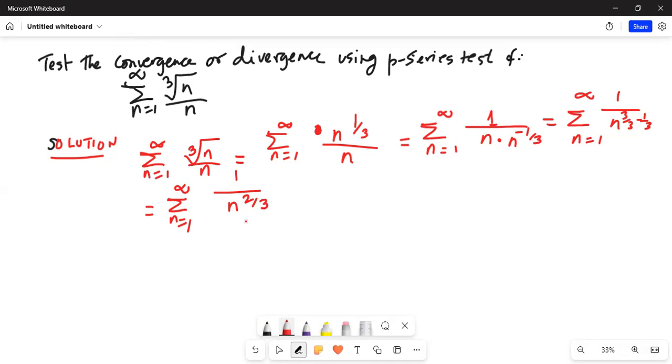Now the question is, does this series diverge or converge? We will use the p-series definition. The p-series is summation n equals 1 to infinity, 1 over n to the power of p, which equals 1 to the power of p plus 1 over 2 to the power of p plus 1 over 3 to the power of p and so on up to infinity.